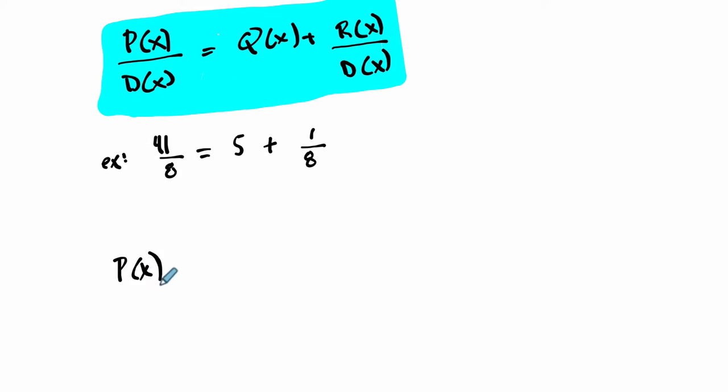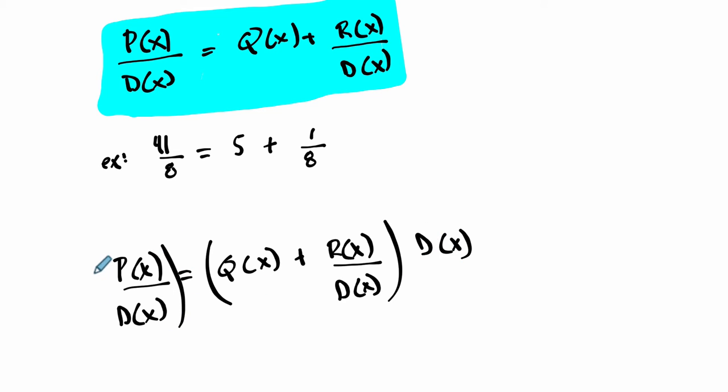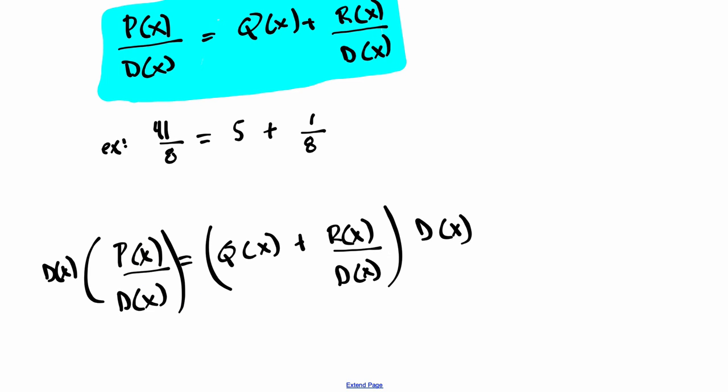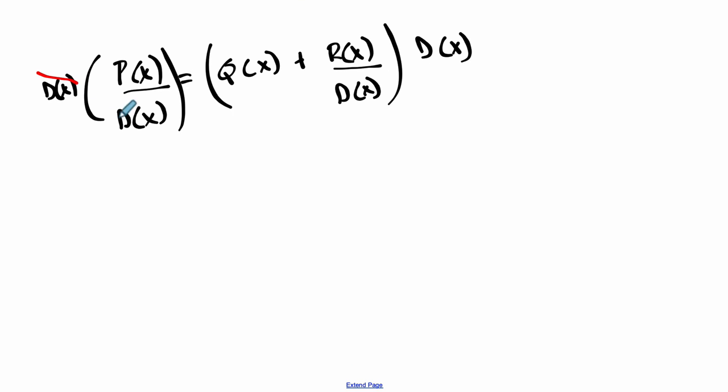So you have a polynomial divided by divisor equals a quotient plus a remainder over our divisor. So if you multiply the right-hand side by your divisor and the left-hand side by your divisor, take a look. Here, on the left-hand side, the divisors cancel, and you're just left with p of x.